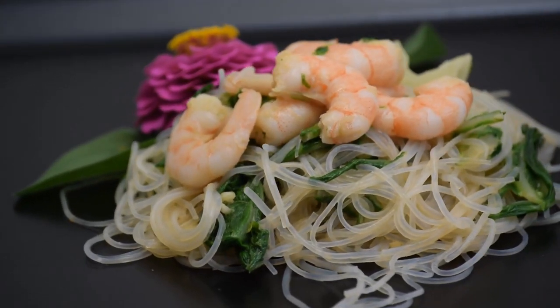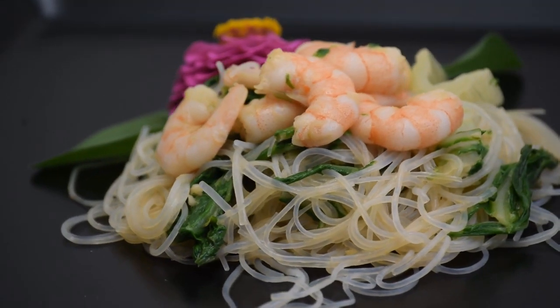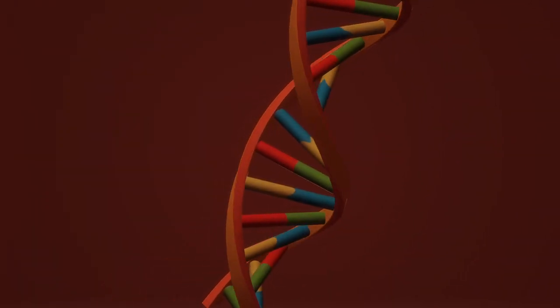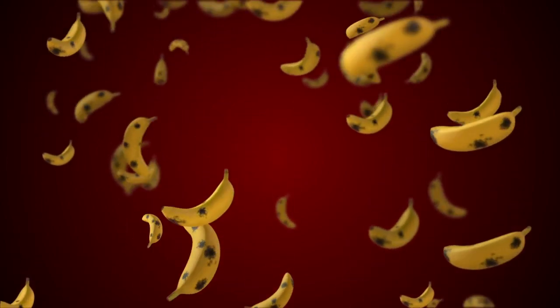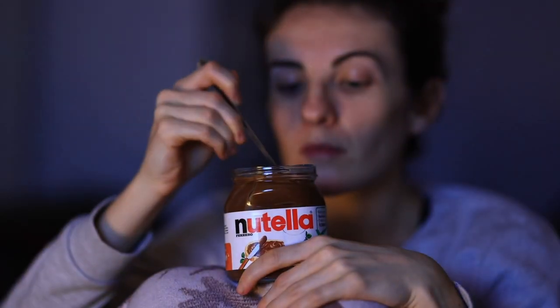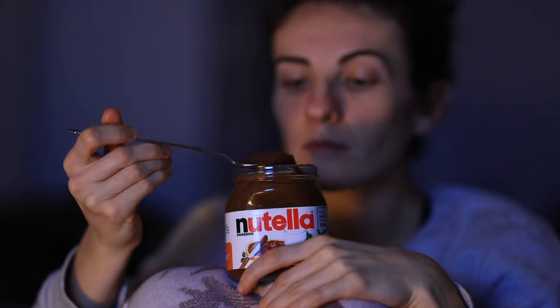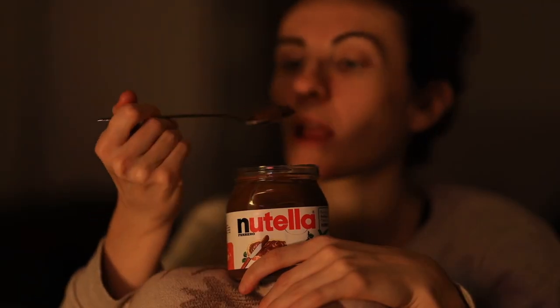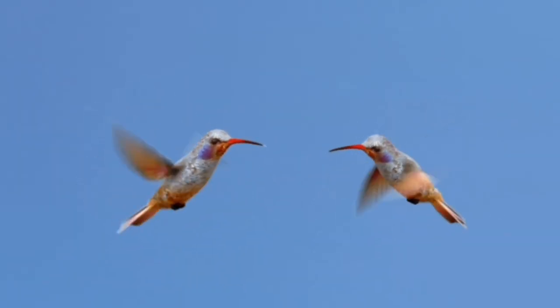A prawn or shrimp's heart is in their heads. Humans share 50% of their DNA with bananas. A jar of Nutella sells every 2.5 seconds. Hummingbirds can fly backwards.